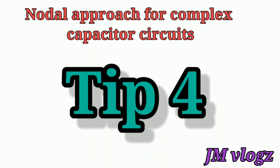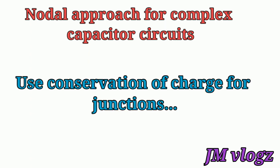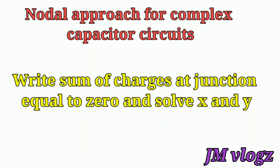Tip number four: we use the conservation of charge. That means for any junction we take the total charge as zero.